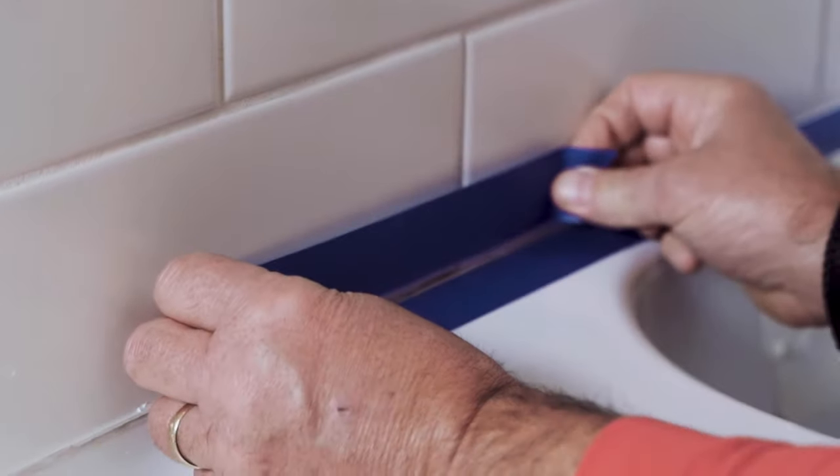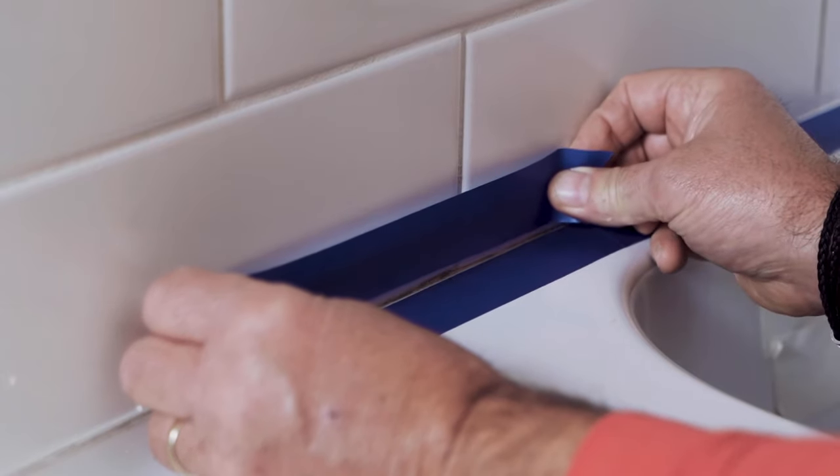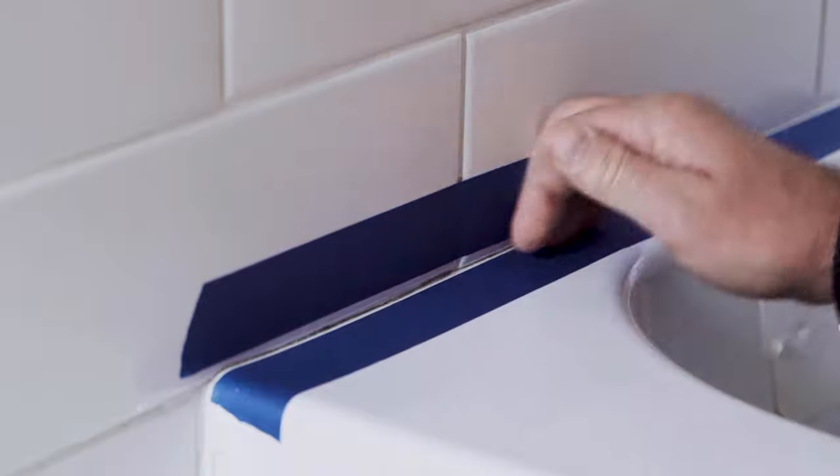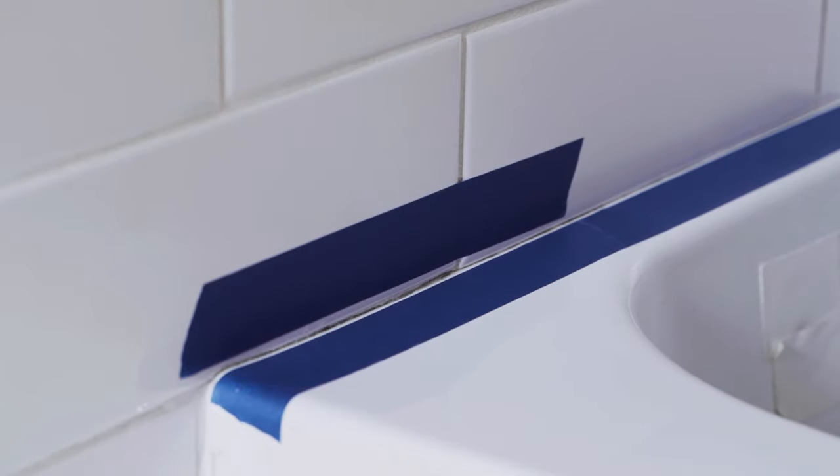So you're going to take that tape and hold it just above that joint area so that when you go to fill this in with the caulking and you remove the tape, you get a real straight line.